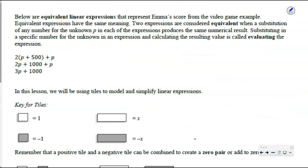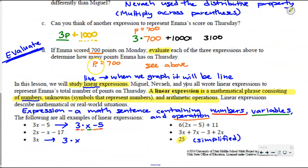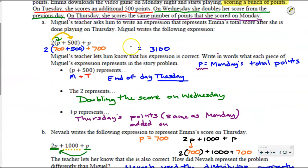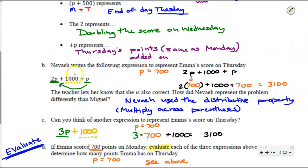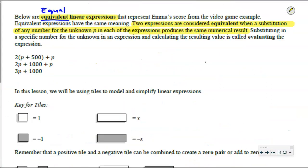The next thing we want to talk about is equivalent linear expressions or equivalent expressions. The root word of equivalent is simply equal. Two expressions are considered equivalent or equal when a substitution of any number for the unknown p in the expression produces the same numerical result. Remember how at the end we said, what if we pretend that p is 700? We plugged it into this one and what did we get? 3100. We plugged it into this one and what did we get? 3100. And we plugged it into this one and what did we get? 3100. Those are equivalent expressions.